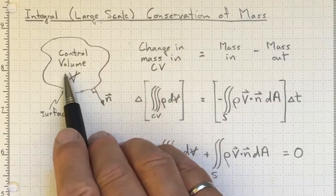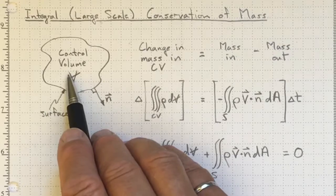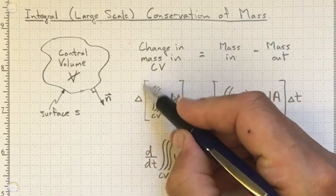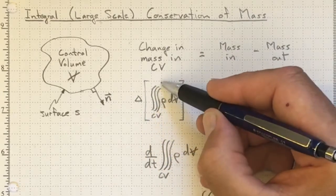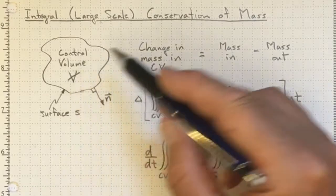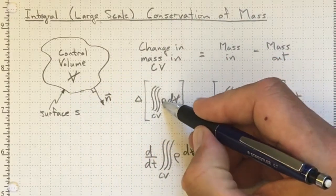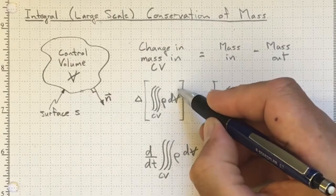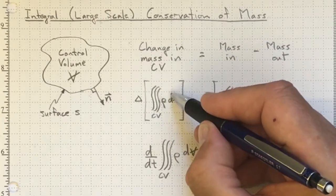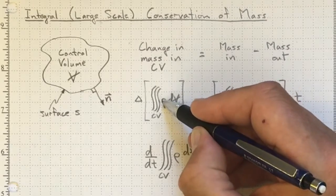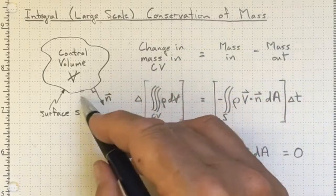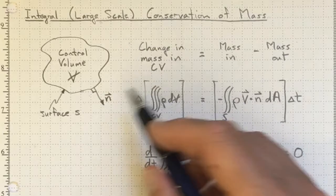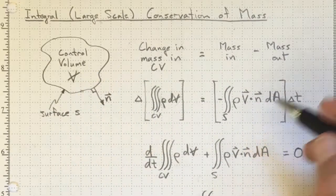And this is the same kind of control volume analysis that you did in your thermodynamics course. So the change, the delta, of the triple integral over the entire control volume of the mass per unit volume times the incremental element of volume, dv. So this is a small chunk of mass. You get from volume to mass by multiplying by density, integrated over the whole region of interest gives us the mass. And the change in that tells us how much the mass is increasing or decreasing.